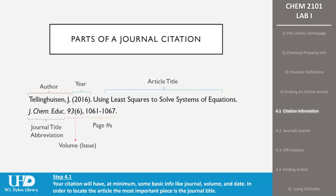Sometimes you'll have a complete citation, including author, title, and issue number. In this example, the parts of the citation are labeled: Tellinghuesen, J — the author; 2016 — the year of publication; 'Using Least Squares to Solve Systems of Equations' — the article title; J Chem EDUC — the journal title abbreviation; 93 — the volume number; 6 — the issue number; and 1061 to 1067 — the page numbers. In order to locate the article, the most important piece of information is the journal title. Many times the citation you have will have a journal title abbreviation rather than the full journal title. When looking for articles at the UHD Library, you'll need to know the complete journal title, and the easiest way to find that out is to Google the abbreviation. Put J Chem EDUC in Google. Looking at the results, you'll see that the complete journal title is the Journal of Chemical Education.